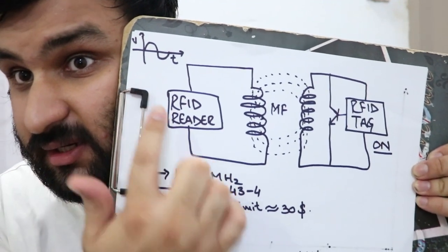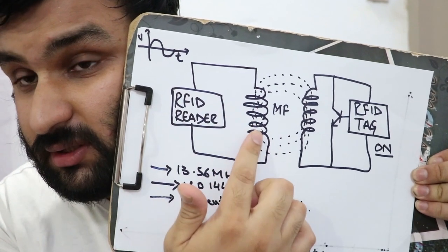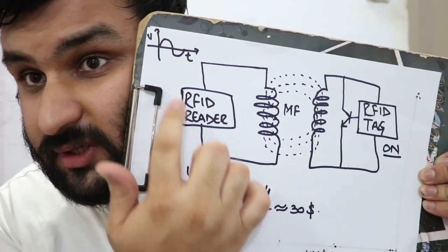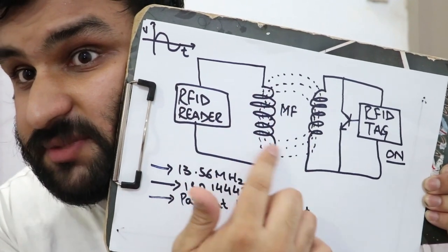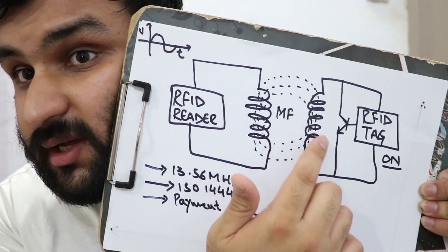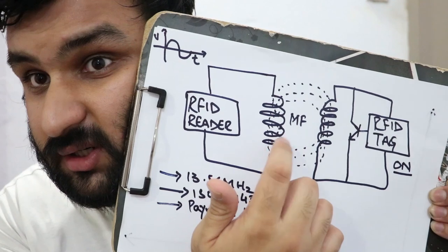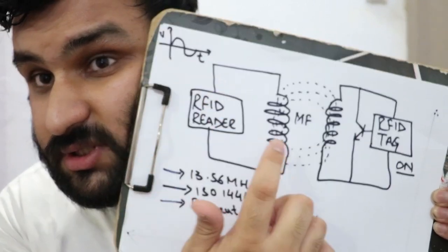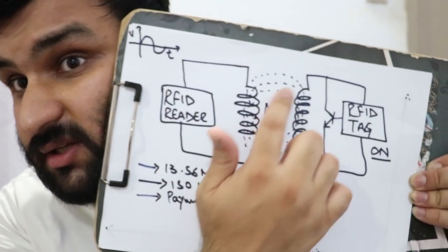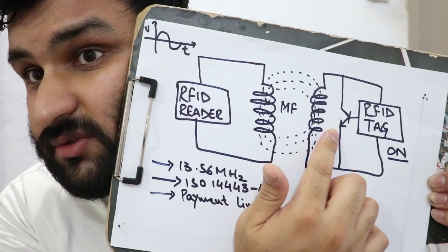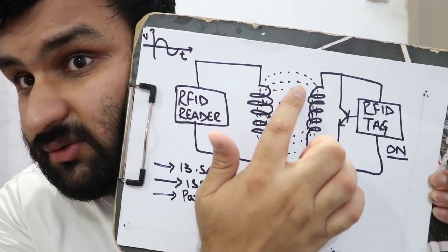Basically how that works is the RFID reader is connected to the coil. The RFID reader induces a sinusoidal voltage which produces magnetic field. Whenever the RFID tag comes into the RFID reader, this voltage induces another voltage, also a sinusoidal voltage, and that runs sinusoidal current through this.